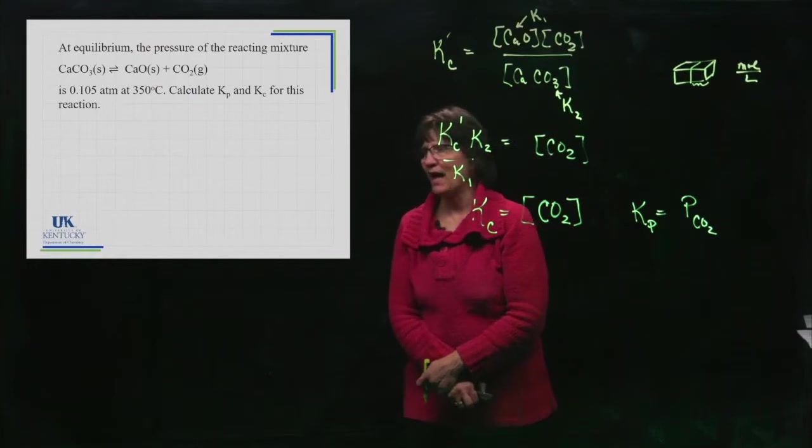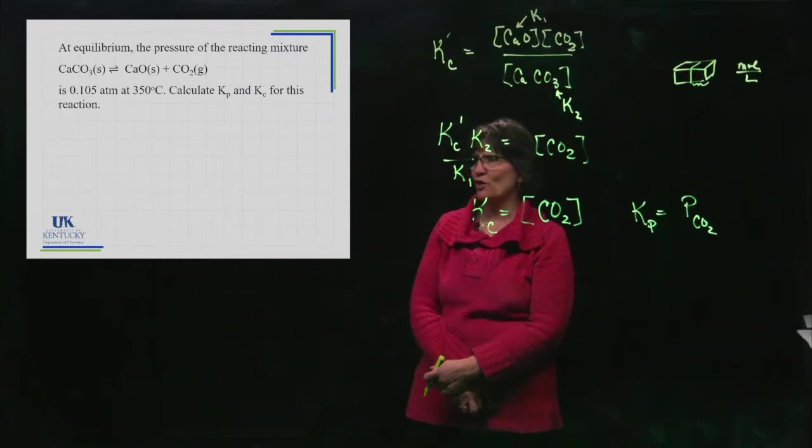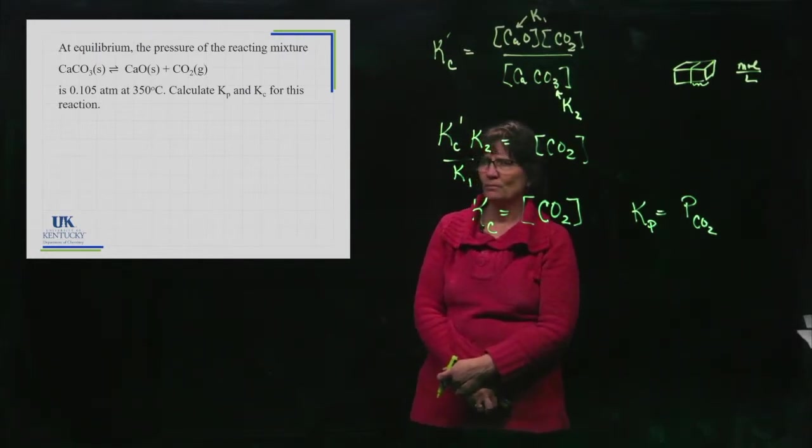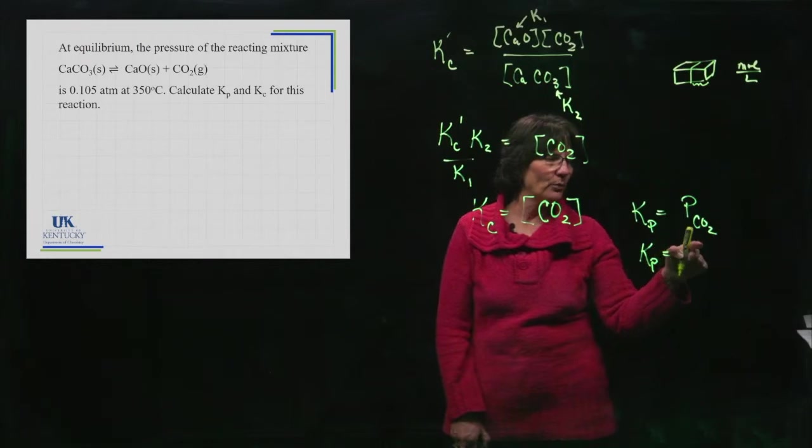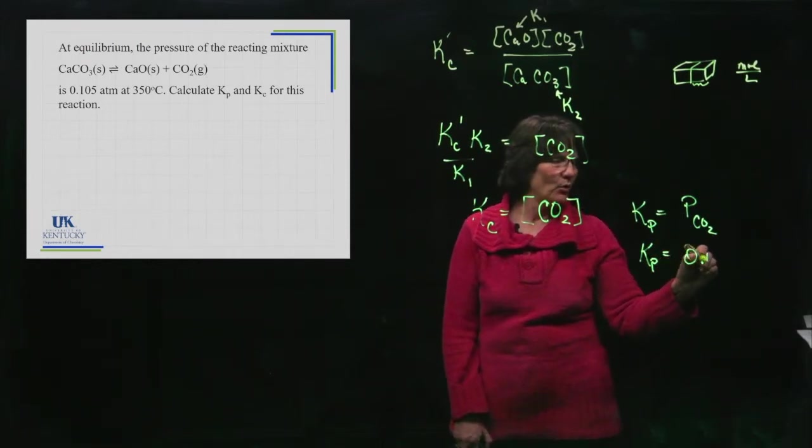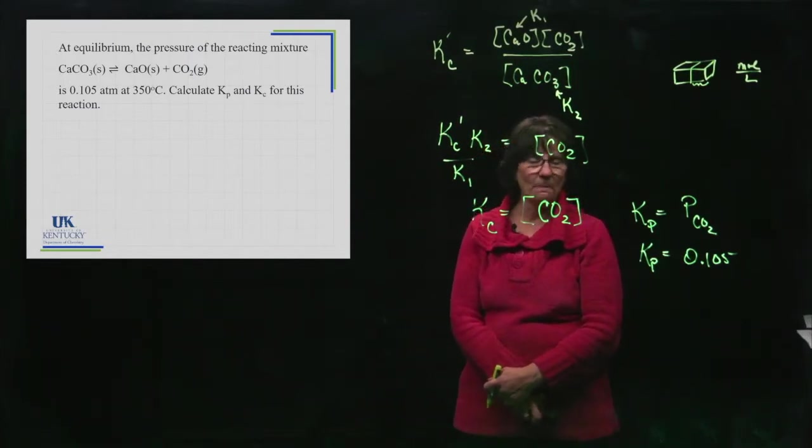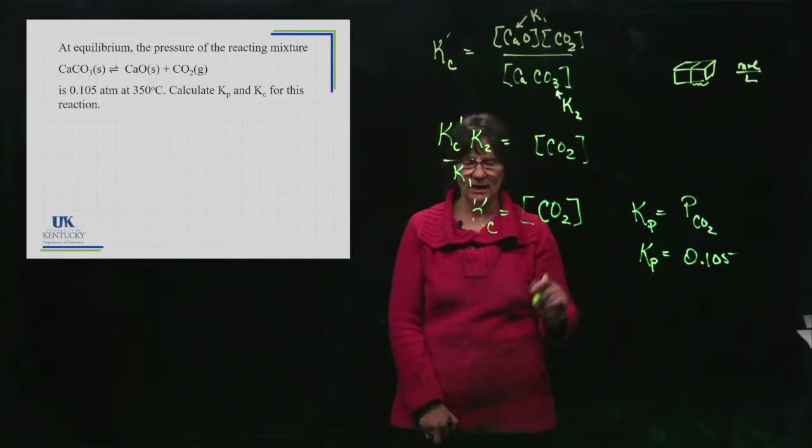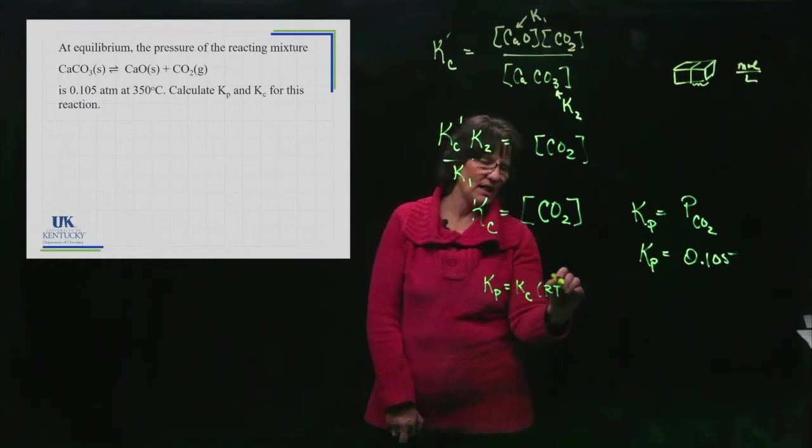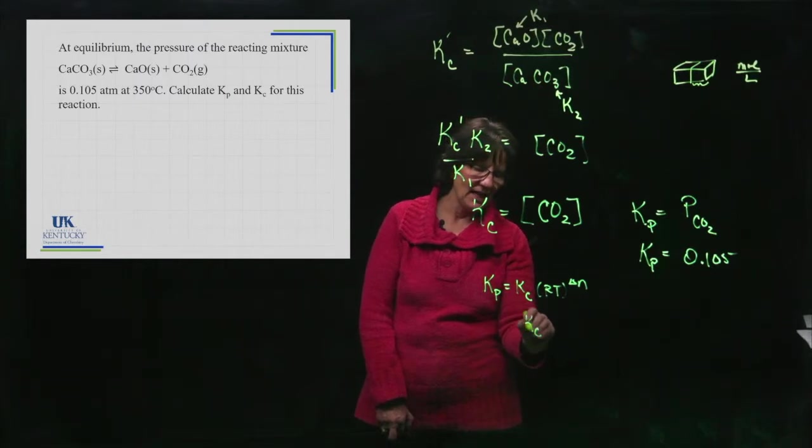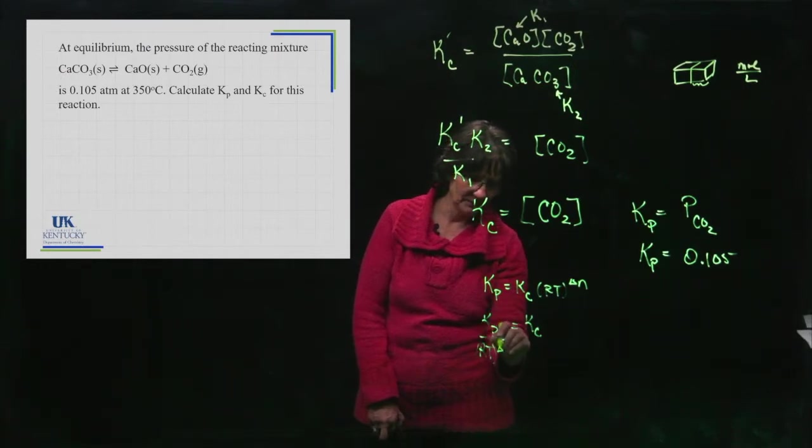So here is that equilibrium, and we have a problem for it. It says the whole mixture has a pressure of 0.105. If you look at that mixture, that would be the pressure of carbon dioxide, because it's the only thing that's a gas. So Kp would be equal to the pressure of carbon dioxide, 0.105. Now we aren't given information to get concentrations, but we do know a relationship between Kc and Kp. We know that Kp equals Kc times RT to the delta n.